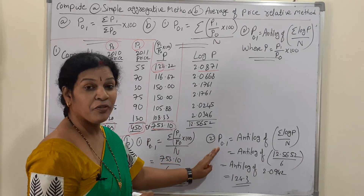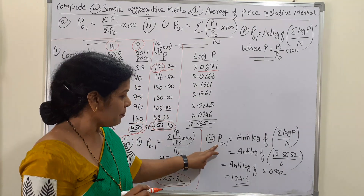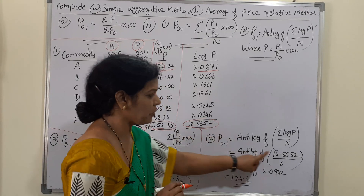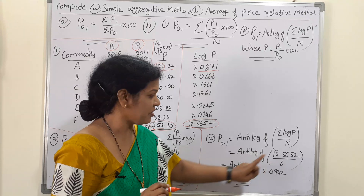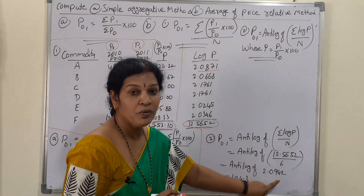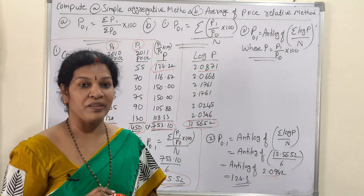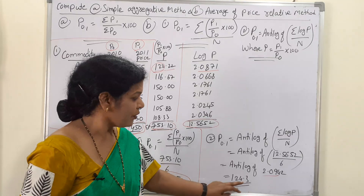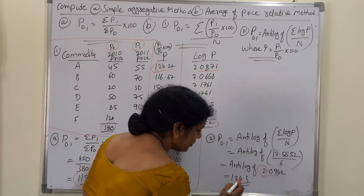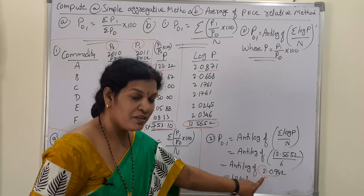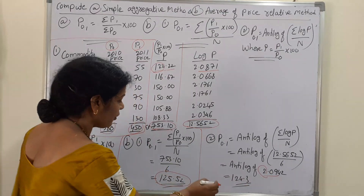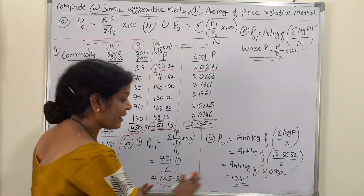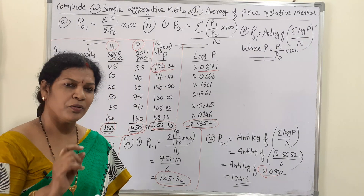Applying the logarithm formula: P₀.₁ = antilog (Σ log P / n) = antilog (12.5652 / 6) = antilog (2.0942). Looking up the antilog table for 2.0942 gives 124.3. The characteristic 2 means we place the decimal after 3 digits, giving 124.3.